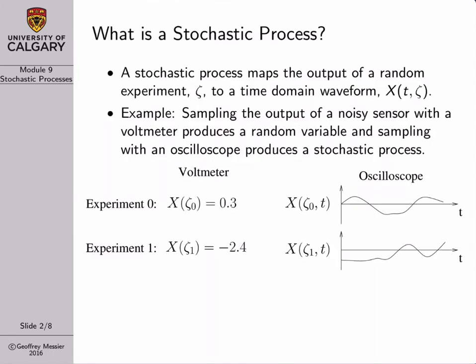Similar to what we did when we started our discussion of random variables, I want to begin our discussion of stochastic processes by establishing a very clear engineering-based notion of what exactly a stochastic process is. The quick definition for a stochastic process is a random waveform. However, we can understand it a little bit more deeply by going back to our understanding of a random variable.